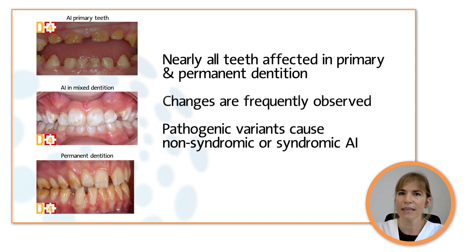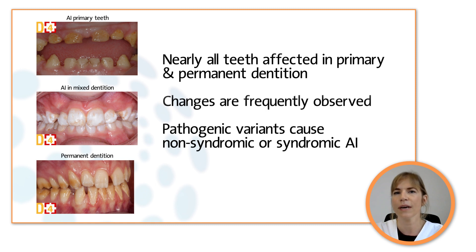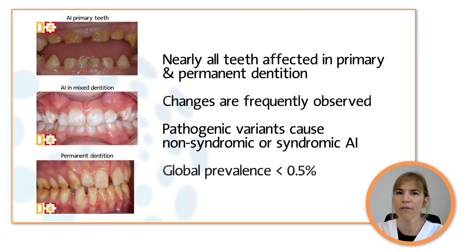Pathogenic variants in at least 70 genes cause non-syndromic Amelogenesis Imperfecta, or syndromic Amelogenesis Imperfecta when it is associated with other abnormalities. The global prevalence is below 0.5 percent.